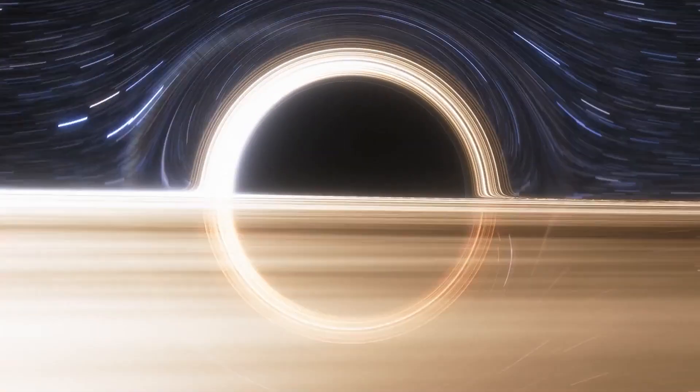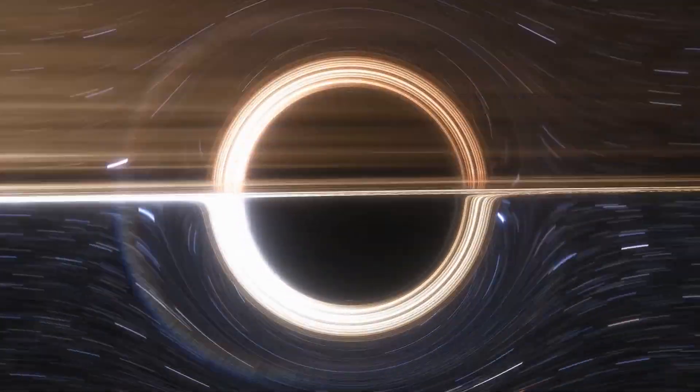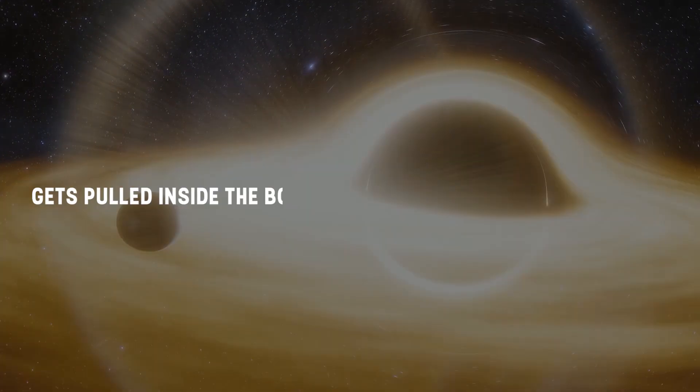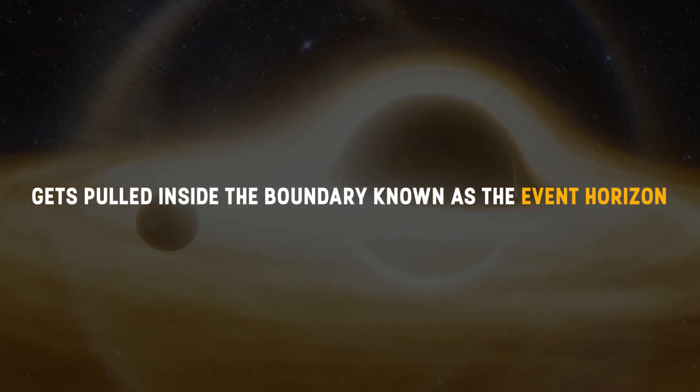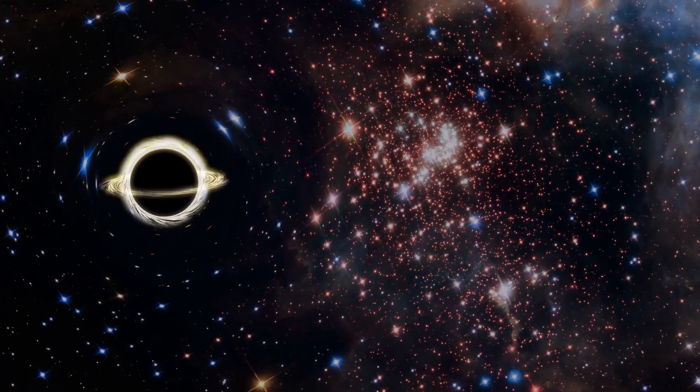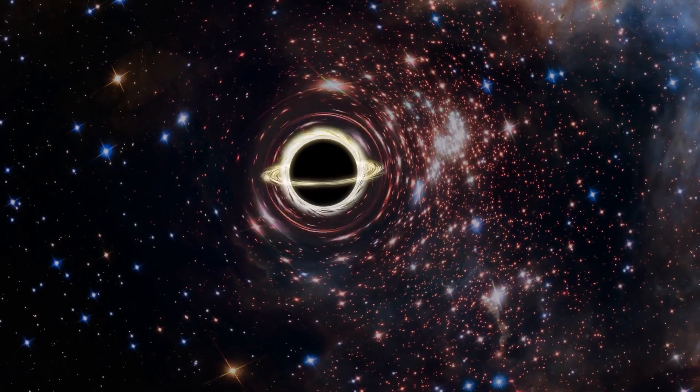Black holes cannot be directly observed because no light escapes. Anything that passes too close, including light, gets pulled inside the boundary known as the event horizon. But we can detect them through their gravitational influence on nearby gas clouds and stars.